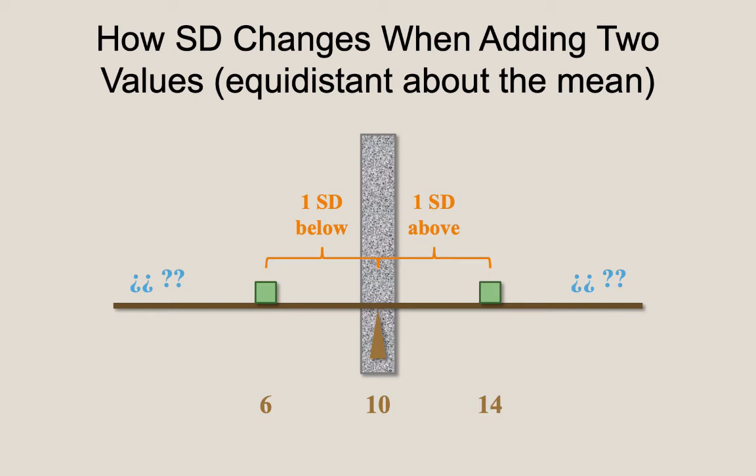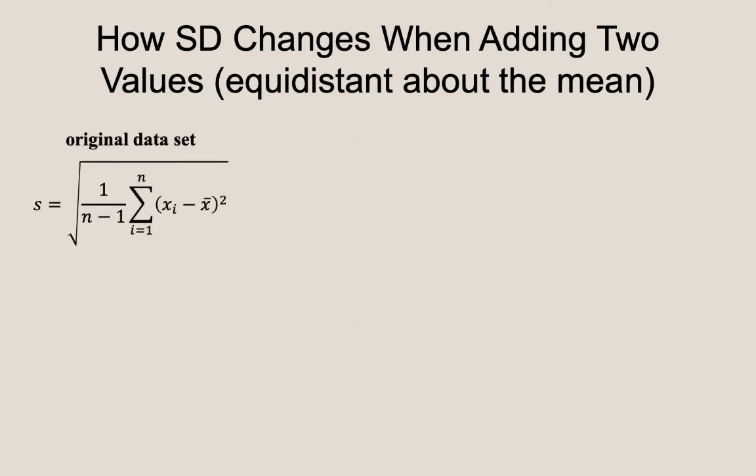For those who wish to skip the mathematics of the proof for this, you can skip ahead to timestamp 559. First, let's write out the formula for the sum of square deviations for a sample. Starting with the standard deviation formula, we will square both sides and multiply both sides by the difference of n minus 1. This gives us a formula for the sum of the squared deviations for the first n terms.